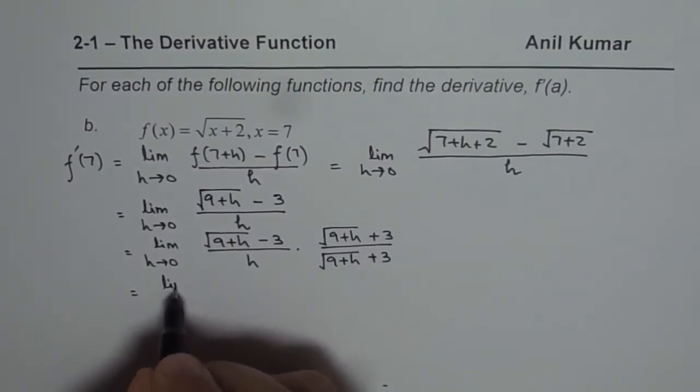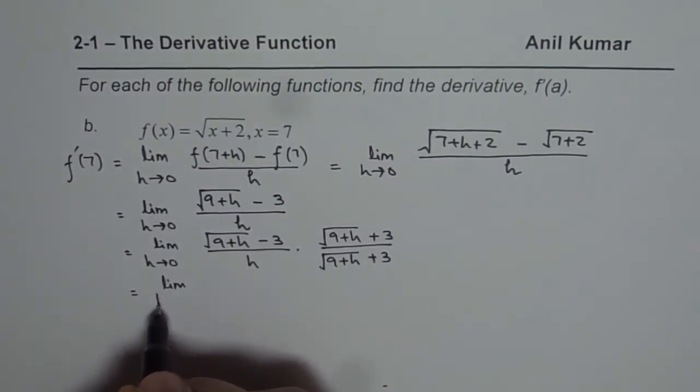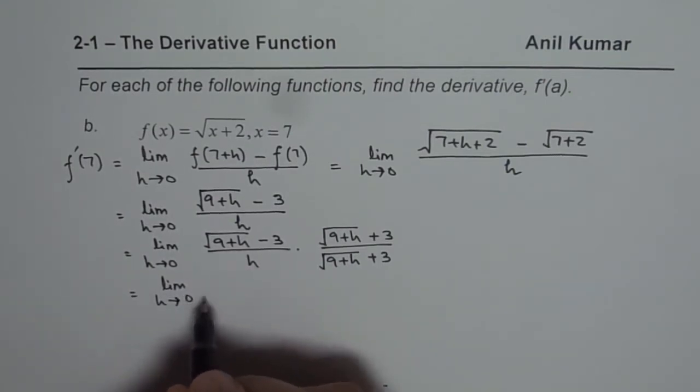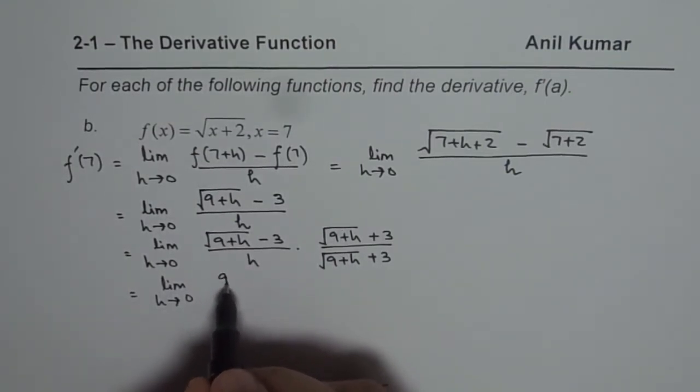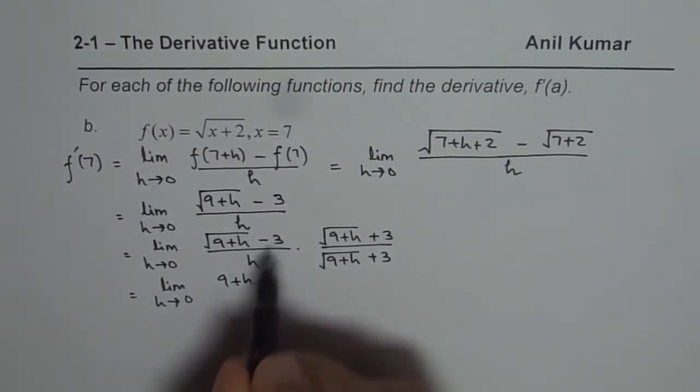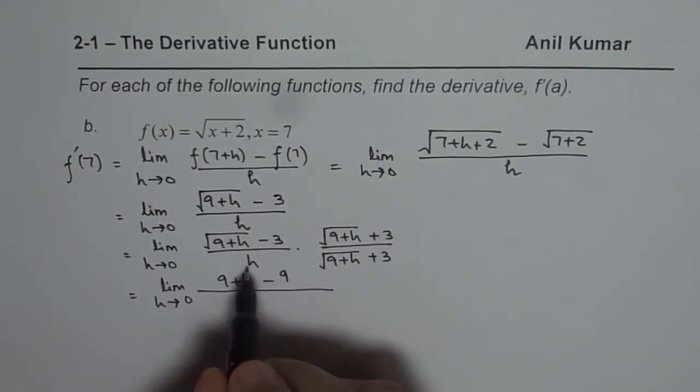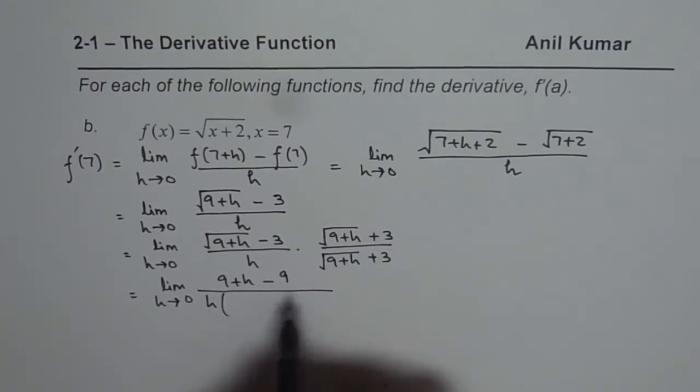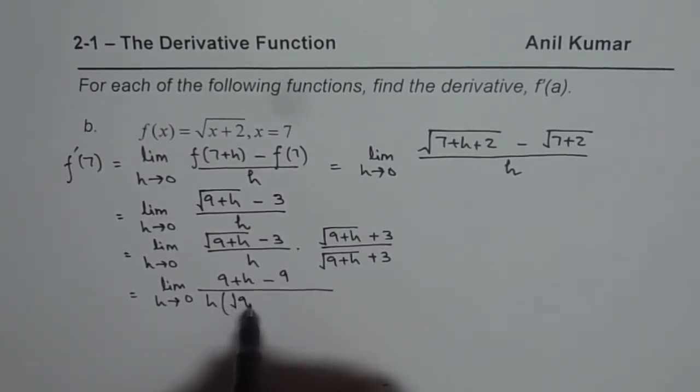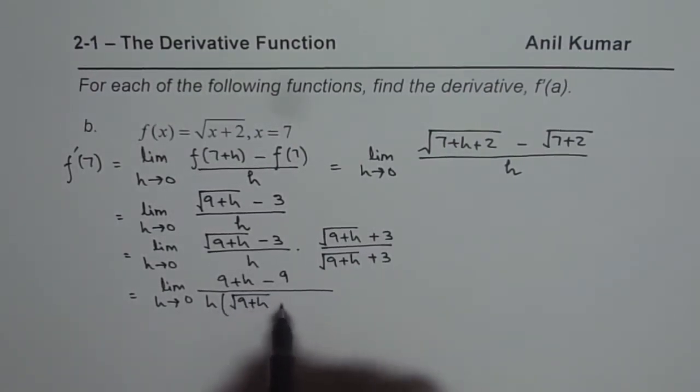Now once you rationalize, you can write the numerator as difference of squares. So difference of squares will be this square which is 9 plus h minus 3 square which is 9 divided by h times square root of 9 plus h plus 3.